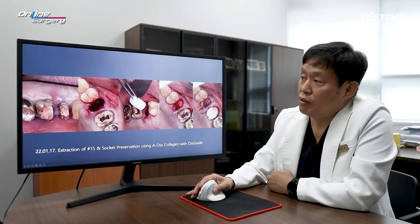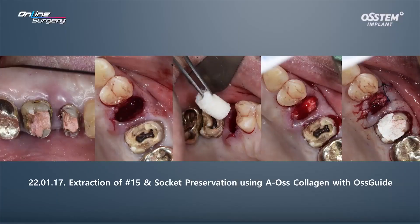The bridge was removed. Number 6 and number 5 — endodontic treatment was not done. Number 5 was extracted, and AS collagen and OsGuide was used. Suture was done and socket preservation was completed. On the palatal side, there was a bit of swelling, pus suction was done, and curettage was done.